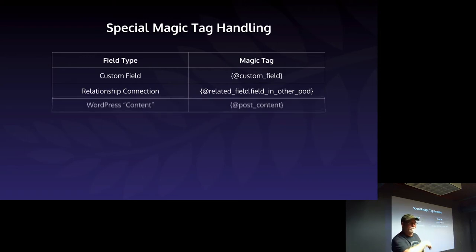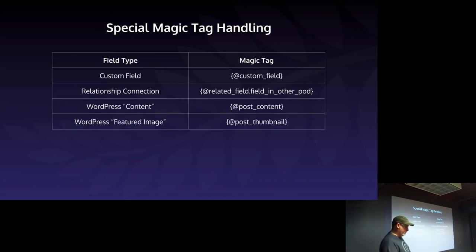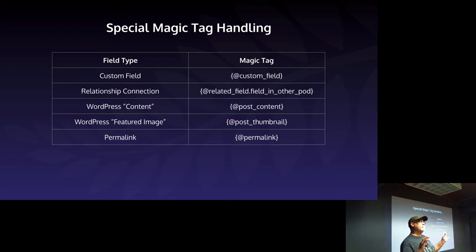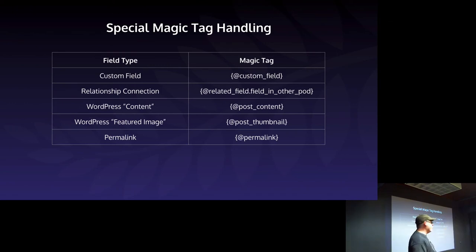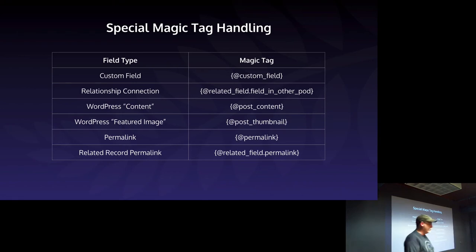WordPress content — the actual editor box — is called `{@post_content}`. The featured image is `{@_thumbnail_id}`. The permalink, when you don't want to remember a domain slash slug, is `{@permalink}` — exactly equal to WordPress's `get_permalink()` function. We also have related field record permalinks: `{@related_staff.permalink}` gives you the link to that related post, as opposed to the post you're currently on.